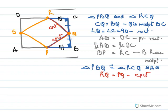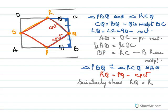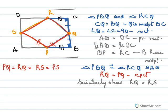We have shown PS equals PQ and RQ equals PQ. Similarly we can show RQ equals RS. So in the end: PQ equals RQ, RQ equals RS, and RS equals PS. All four sides are equal, therefore PQRS is a rhombus.